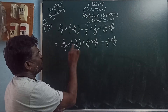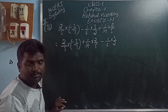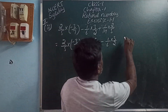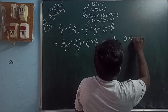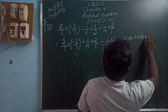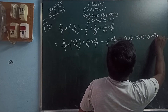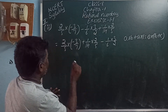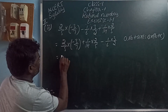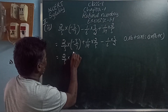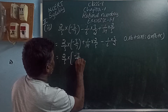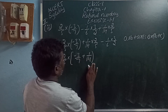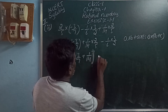In these two terms the common multiple is 2 by 5. Which property can we use? Distributive property. That is A into B plus A into C equals A into (B plus C). The common multiple 2 by 5 is taken outside. What remains is minus 3 by 7 plus 1 by 14.